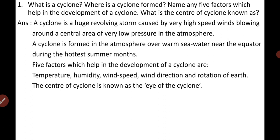Cyclone is basically a weather condition — it is the weather condition consisting of a system of high speed winds revolving around a central area of very low air pressure. Where is a cyclone formed? A cyclone is formed in the atmosphere over warm sea water near the equator during the hottest summer months.